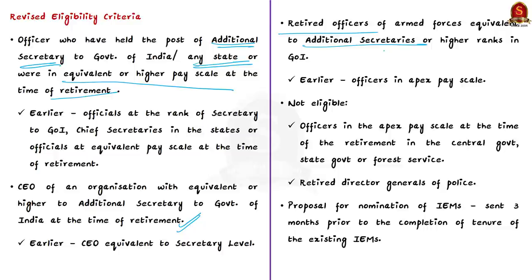Along with expanding the eligibility criteria, the CVC has also removed certain officers from the eligibility list. Officers who were in the apex pay scale at the time of retirement in the central government, state government, or forest service have been removed. Retired Director Generals of Police have also been removed from the list of eminent persons eligible for empanelment as IEMs. Additionally, proposals for nomination of IEMs should preferably be sent three months prior to completion of the existing IEM's tenure; otherwise the Commission will nominate IEMs on its own.